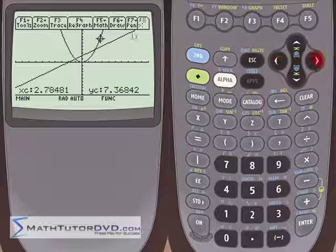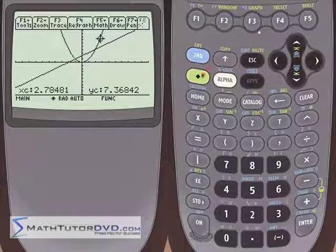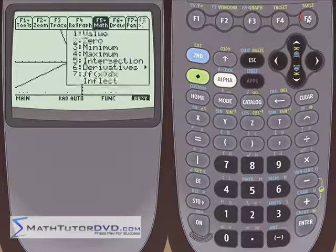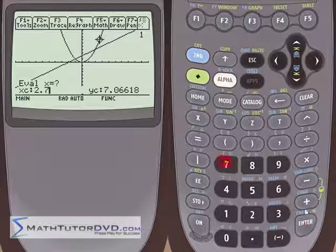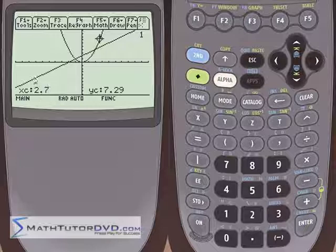It puts a number 1 there. Notice that was not there. So when we're tracing the graph, there's no numbers here, but when we go into f5 and hit value and hit 2.7, then immediately a number 1 pops up, and that tells us that when we plug in 2.7 into function 1, y sub 1, the answer is this.